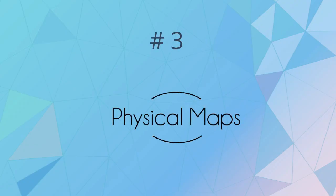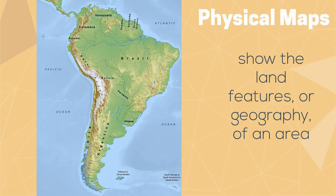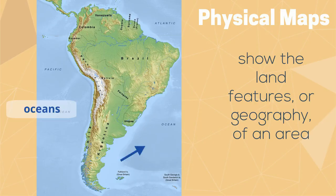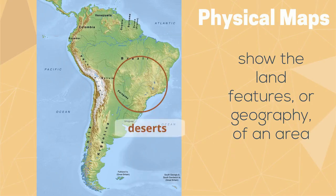Physical maps show the land features or geography of an area. This includes things like mountains, oceans, rivers, and deserts.